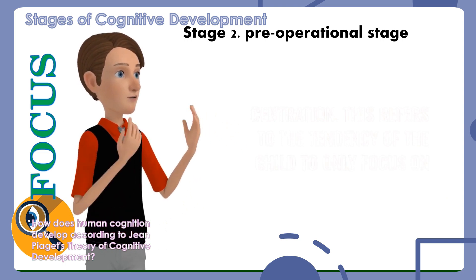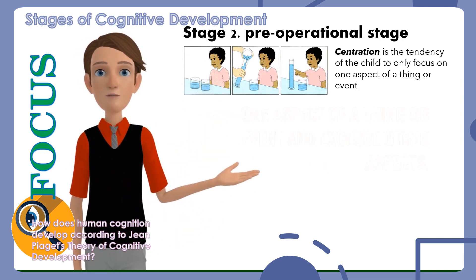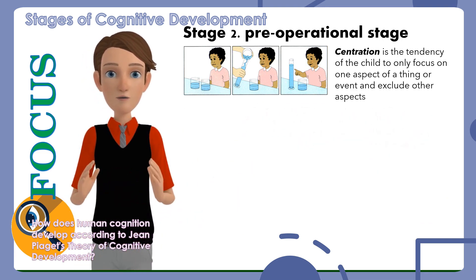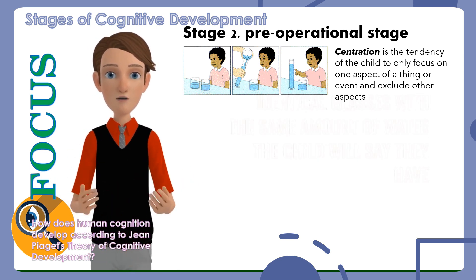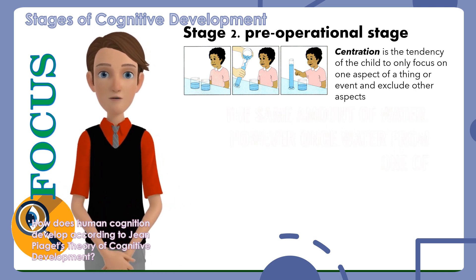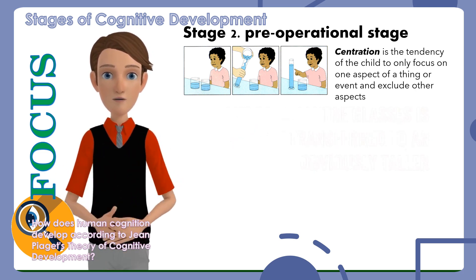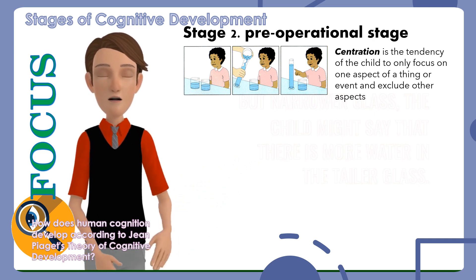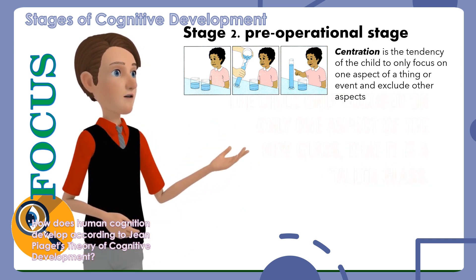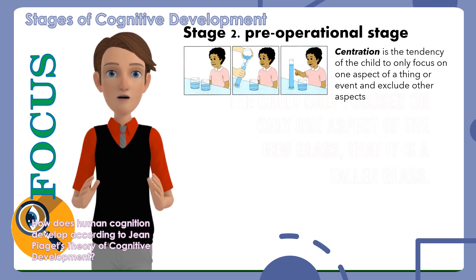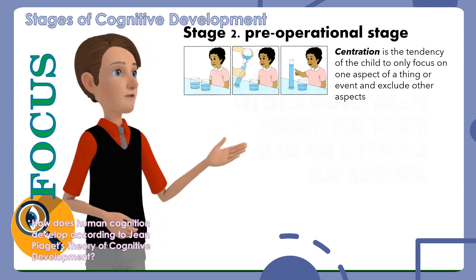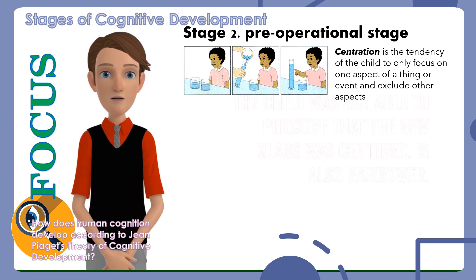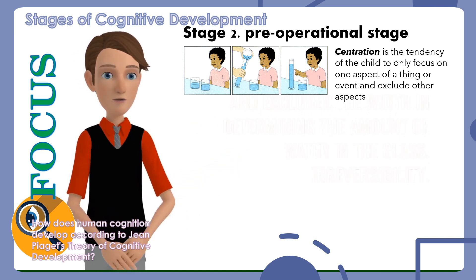Centration: This refers to the tendency of the child to only focus on one aspect of a thing or event and exclude other aspects. For example, when a child is presented with identical glasses with the same amount of water, the child will say they have the same amount. However, once water from one glass is transferred to an obviously taller but narrower glass, the child might say there is more water in the taller glass. The child only focused on one aspect — that it is a taller glass — and was not able to perceive that the new glass was also narrower.